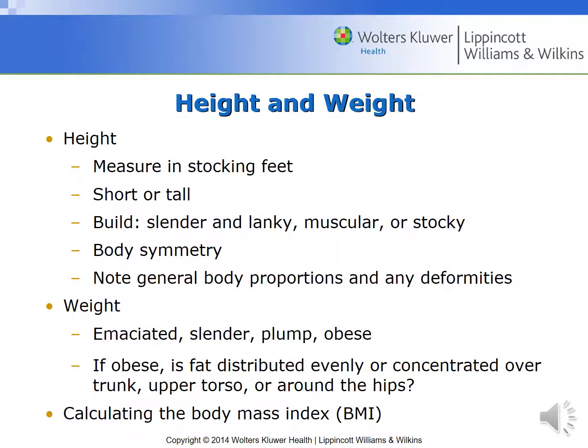When you're looking at height and weight, we want to combine them together in order to get the body mass index or BMI. Some things you're looking at with height include body symmetry — is everything symmetrical? You want to note any body proportions and any gross or obvious deformities. In terms of weight, do they look emaciated or slender, plump or obese? And if obese, you want to look at fat distribution over their trunk, upper torso, and around the hips.